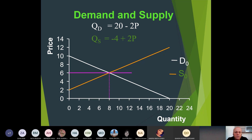We cross the supply and demand lines on the graphic and find the intersection point at P = 6 and Q = 8, consistent with our calculation. For the supply curve: QS = −4 + 2(6) = 12 − 4 = 8. For the demand curve: QD = 20 − 2(6) = 20 − 12 = 8. Both give Q = 8, confirming the equilibrium price is 6 and equilibrium quantity is 8.